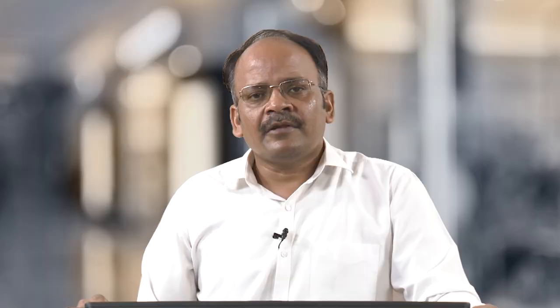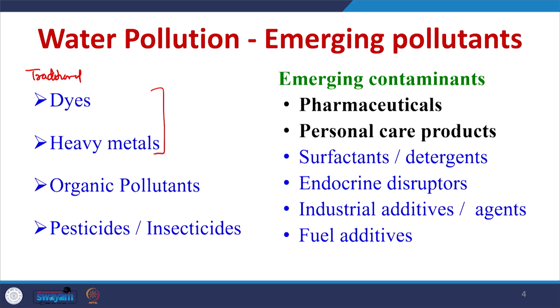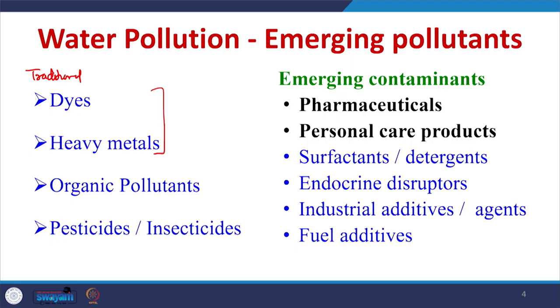Many of these compounds are endocrine disruptors and they cause lot of changes in our body. Similarly, in industry a lot of industrial additives and agents are going into water bodies when industrial units are cleaned or their condensates are released. In fuels, a lot of fuel additives are also being used in our day-to-day life and they are going into the water bodies. These emerging pollutants need to be removed from the water bodies if we have to take care of our environment and use the water for various uses. So there are lot of challenges with respect to emerging contaminants.